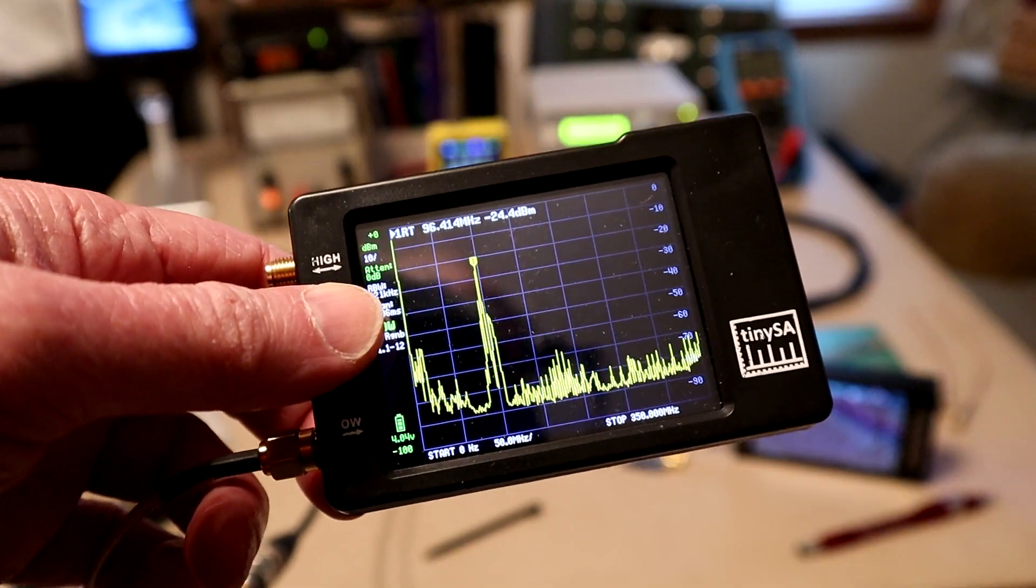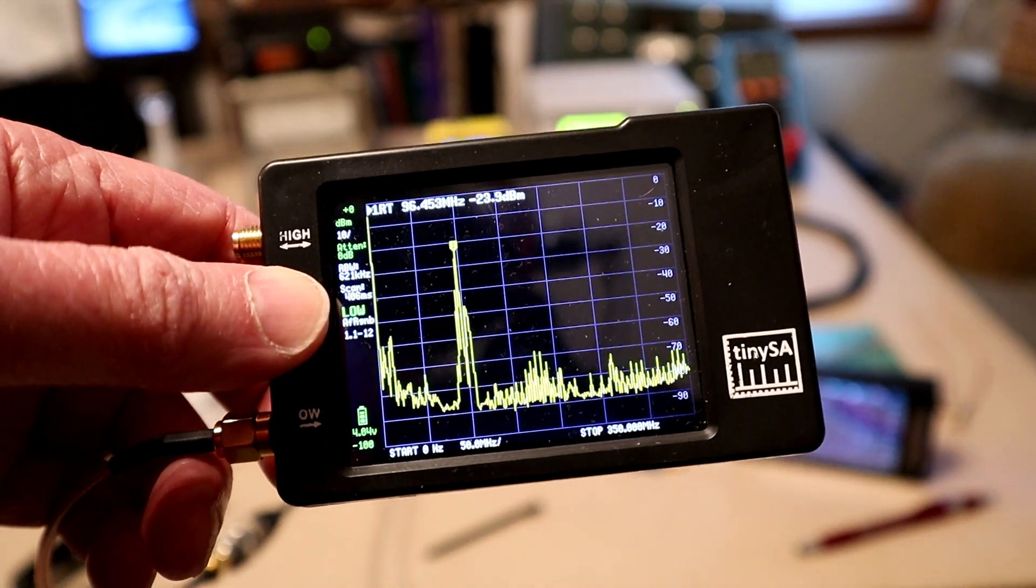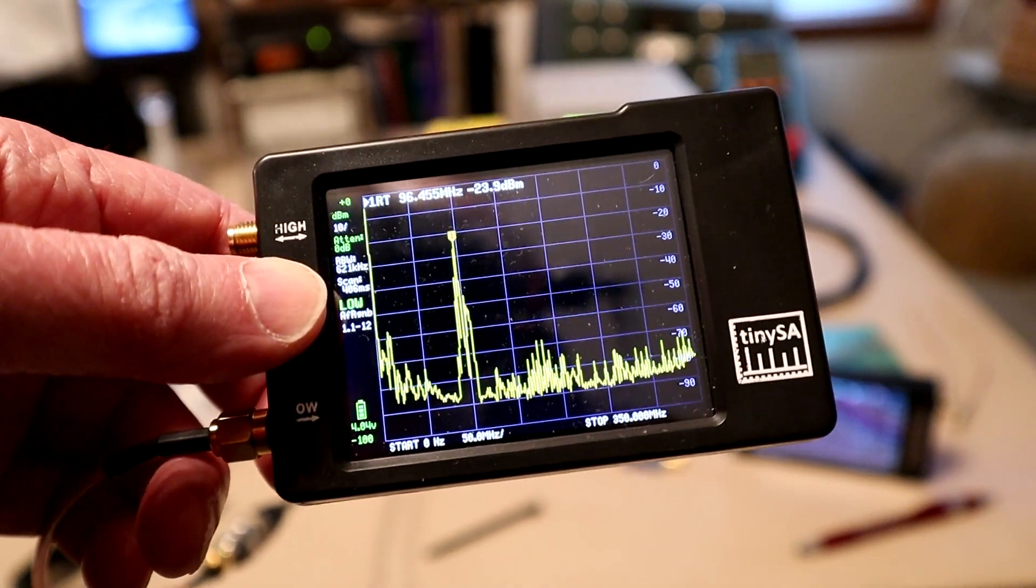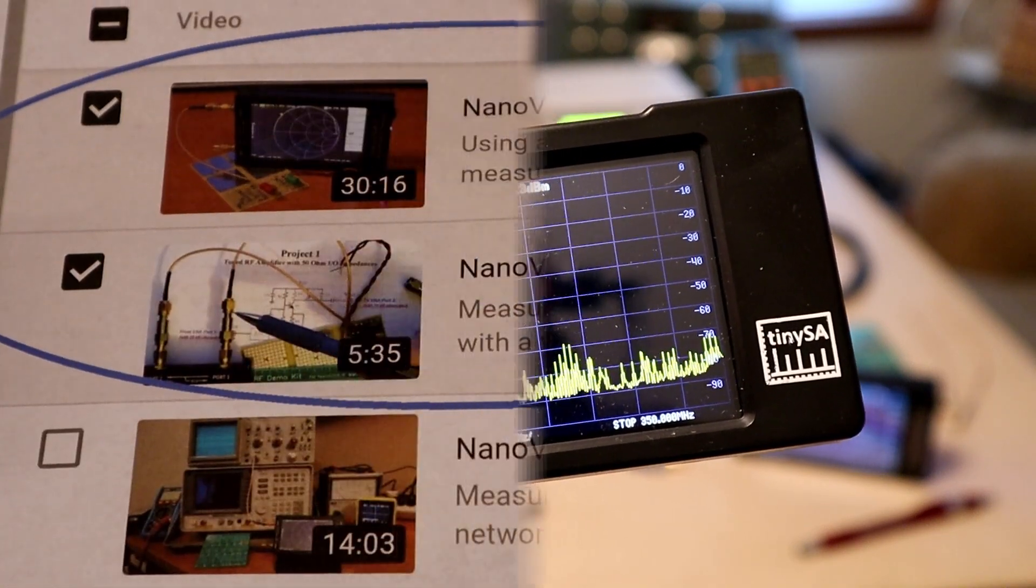But in addition, there's this tiny SA or tiny spectrum analyzer that you may have heard about. This is like 55, 60 bucks, and I couldn't avoid buying it.